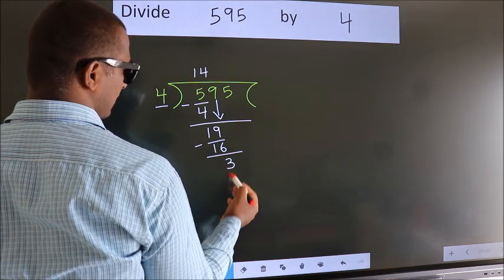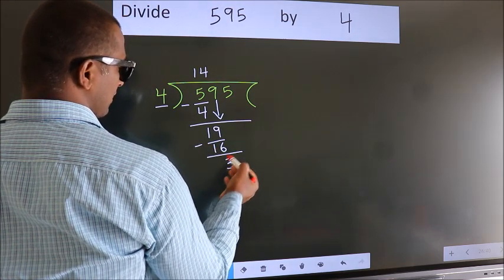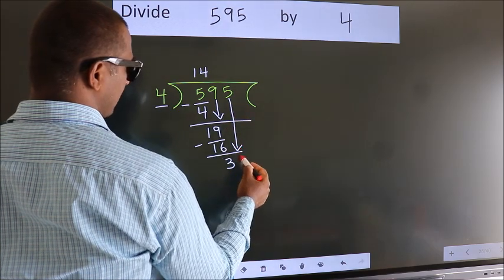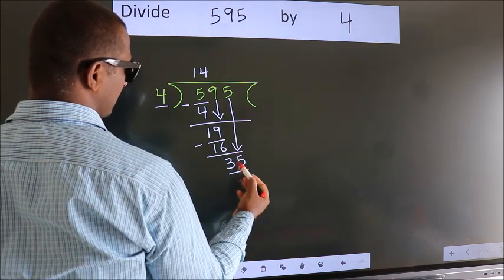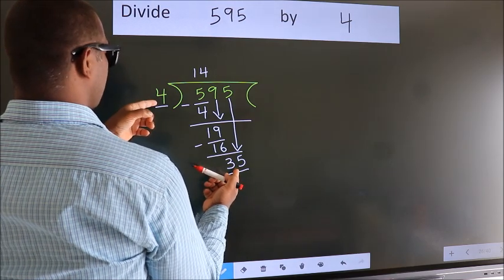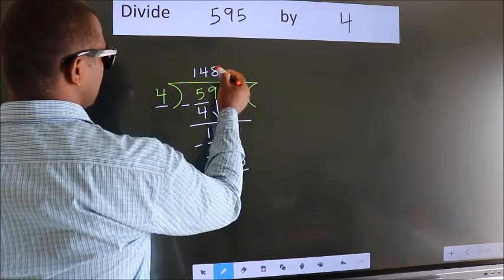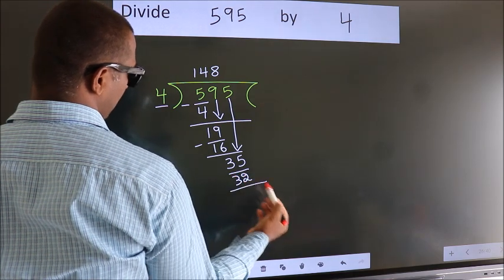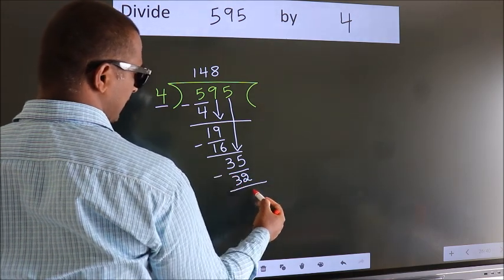We get 3. After this, bring down the beside number. So 5 down, making 35. A number close to 35 in the 4 table is 4 eights, 32. Now we subtract. We get 3.